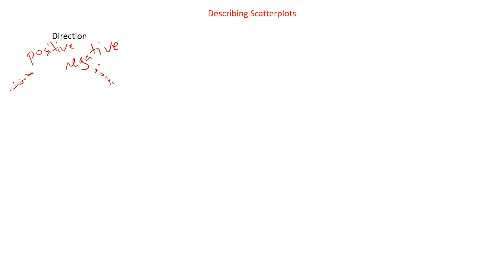Positive is a general upward trend; negative is a general downward trend. The form — right now you have two options: it could be linear, which will never mean perfectly linear because real-world data doesn't come perfectly anything. Linear means it has a general linear form. The other option is non-linear — that could be quadratic, exponential, cubic, square root, logarithmic. In chapters 6 through 9 we will learn how to deal with some of these non-linear graphs, but in general we're looking at linear ones.